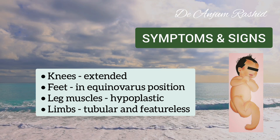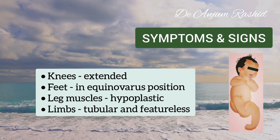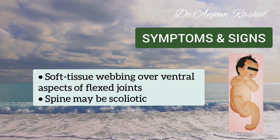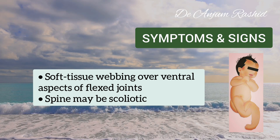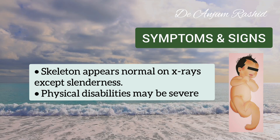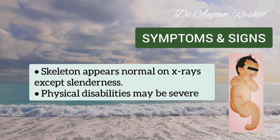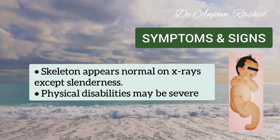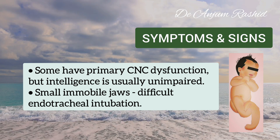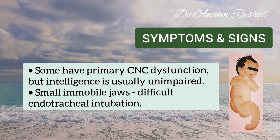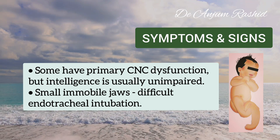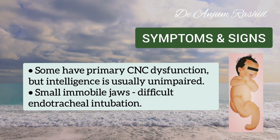Leg muscles are usually hypoplastic and limbs tend to be tubular and featureless. Soft tissue webbing sometimes occurs over the ventral aspect of the flexed joints. The spine may be scoliotic. Except for the slenderness of the long bones, the skeleton appears normal on X-ray. Physical disabilities may be severe. Some children may have primary central nervous system dysfunction, but intelligence is usually unimpaired. These children have small, immobile jaws, so endotracheal intubation during surgery may be difficult.